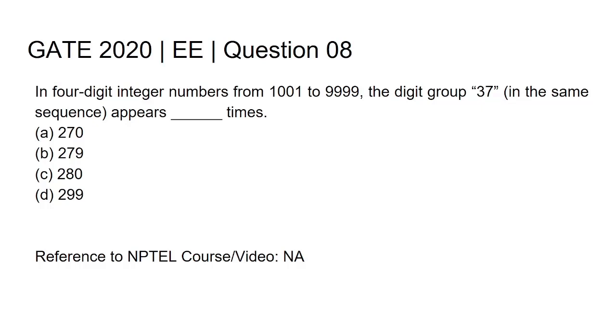Hi all, this is GATE 2020 electrical engineering question number eight. The question is: in four-digit integer numbers from 1001 to 9999, the digit group '37' in the same sequence appears blank space times. Option A is 270, option B is 279.